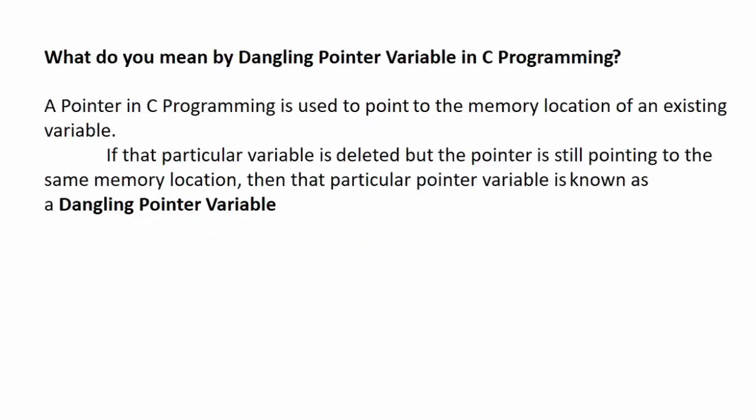Next question: what do you mean by a dangling pointer variable in C programming? A pointer in C programming is used to point to the memory location of an existing variable. If that particular variable is deleted but the pointer is still pointing to the same memory location, then that particular pointer variable is known as a dangling pointer variable.